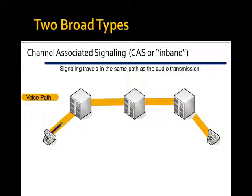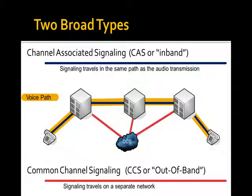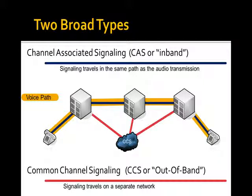Everything we've talked about so far shares a characteristic: the signaling and the audio travel exactly the same path — not just the same geographic path; they actually travel over the same bandwidth path. In an analog circuit, you've got the wire pair carrying your audio, and we're playing voltage and current games with it to do signaling. In a multiplex system, I'm taking part of the bandwidth out of that 64 kilobits — that dedicated channel for one call — and using it to represent my signaling. That's called channel-associated signaling, or in-band signaling: signaling and audio travel the same path. There's a problem with it; we're going to look at it in a second.